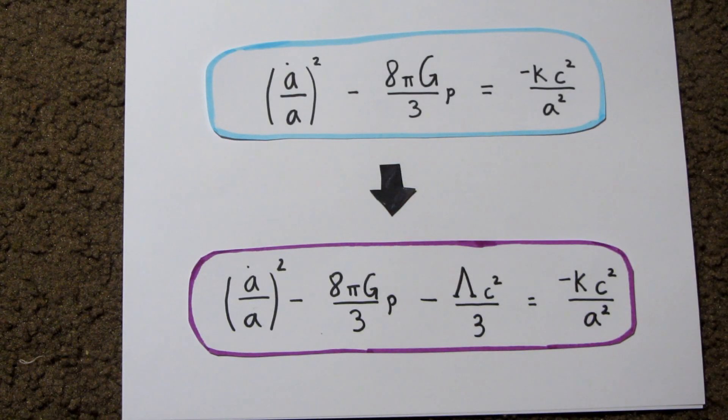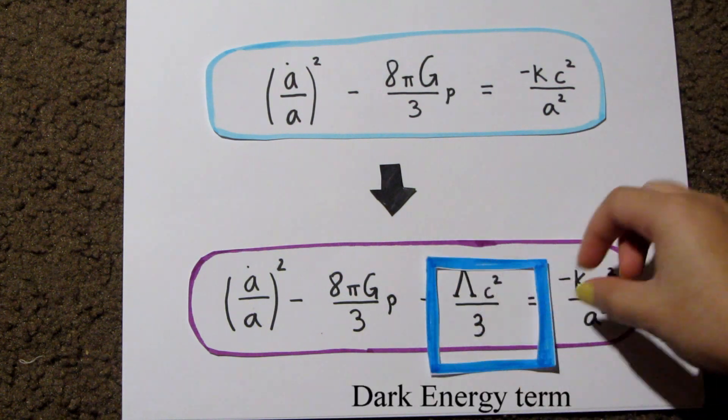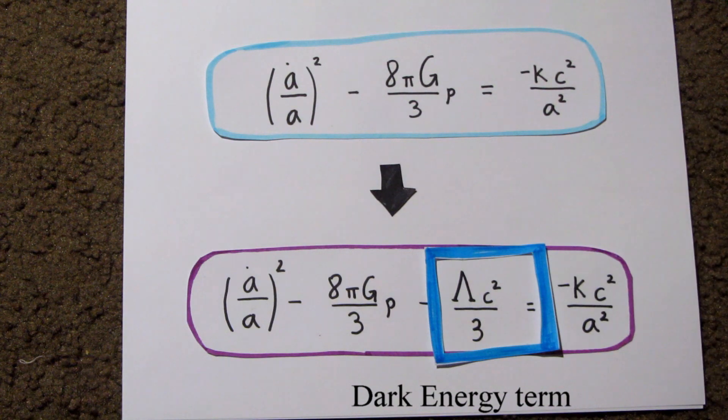The previous model does not work, so we need to add this term representing dark energy to the equation to reconcile this flat and accelerating universe.